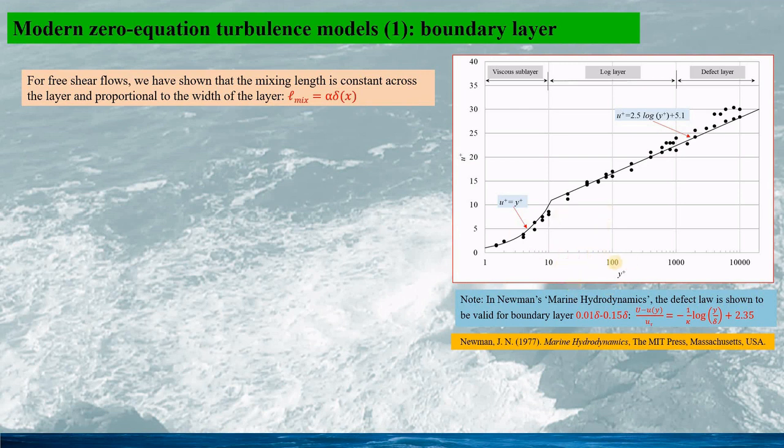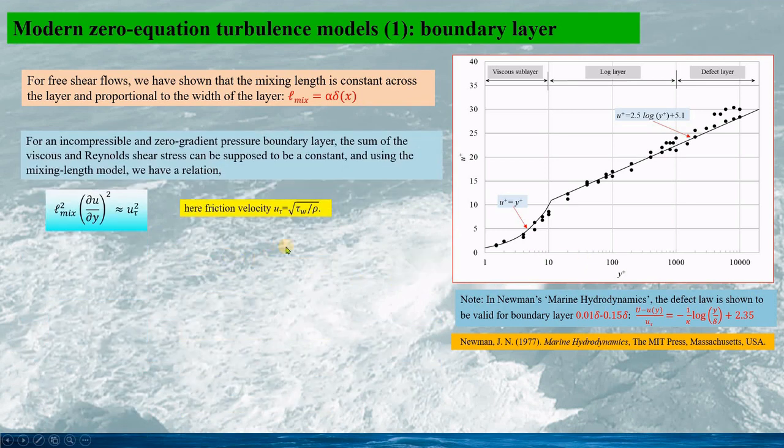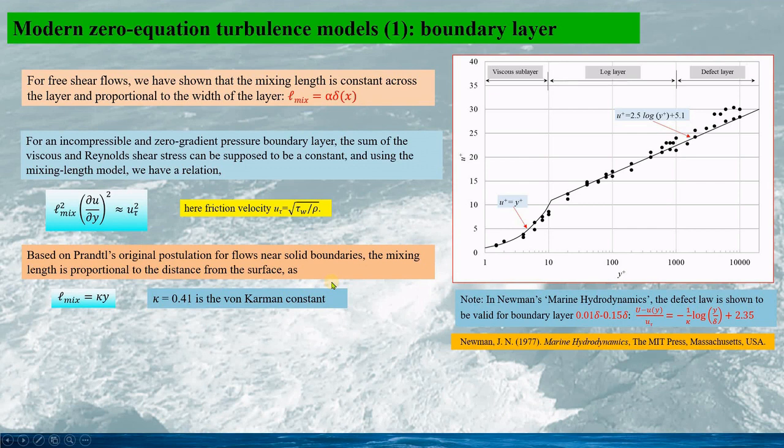So for an incompressible and zero-gradient pressure boundary layer, the sum of the viscous and the Reynolds shear stress can be supposed to be a constant. And using the mixing-length model, we have a relation as this. And u_tau here is the friction velocity. So based on the Prandtl's original postulation for the flow near the solid boundaries, the mixing-length is proportional to the distance from the surface, given as this.